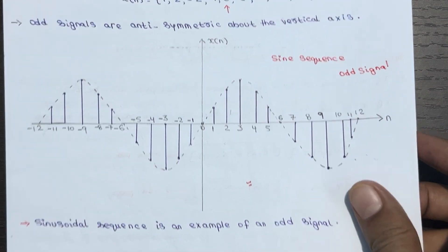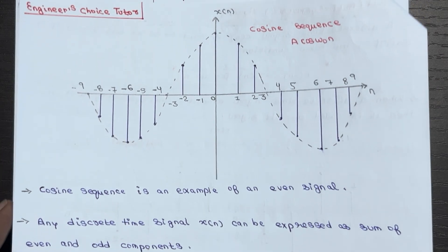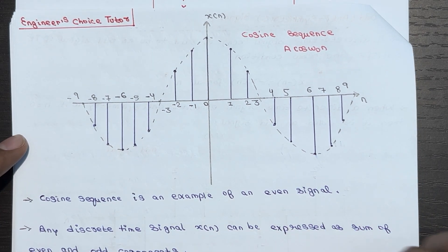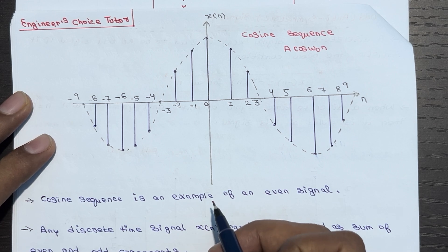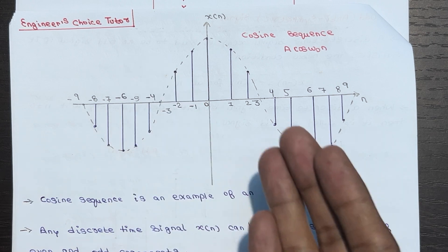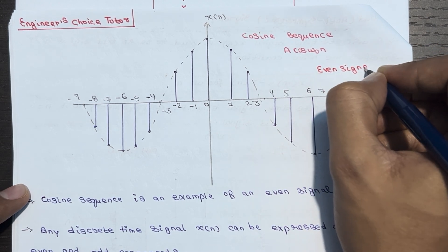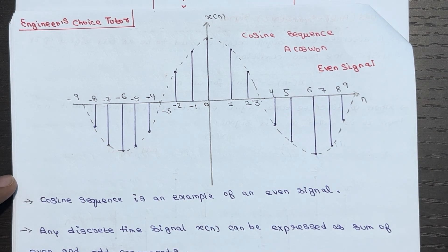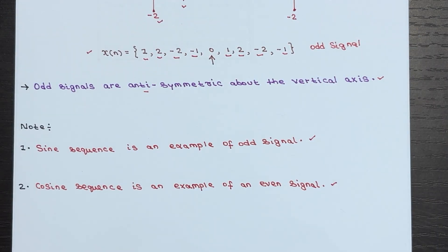A cosine sequence is an example of an even signal — a perfect example of an even sequence. If you see this cosine sequence graph, the behavior on both sides is symmetrical and identical. If you just fold one side, you get the other, so X(n) = X(-n). That is why this is an even signal, identical on both sides of the vertical axis or time origin.